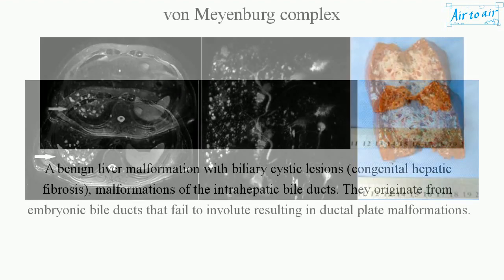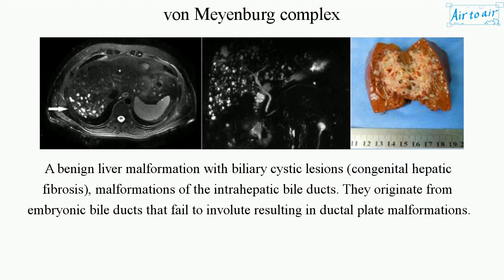Von Meyenberg Complex is a benign liver malformation with biliary cystic lesions, congenital hepatic fibrosis, and malformations of the intrahepatic bile ducts. They originate from embryonic bile ducts that fail to involute, resulting in ductal plate malformations.